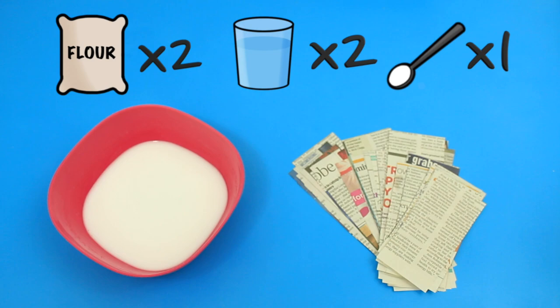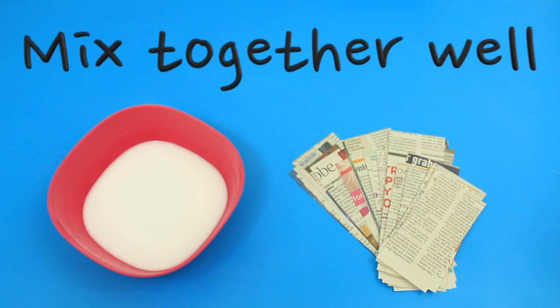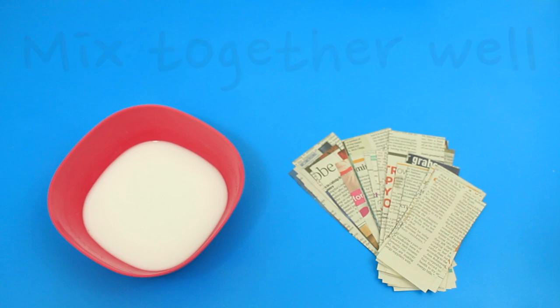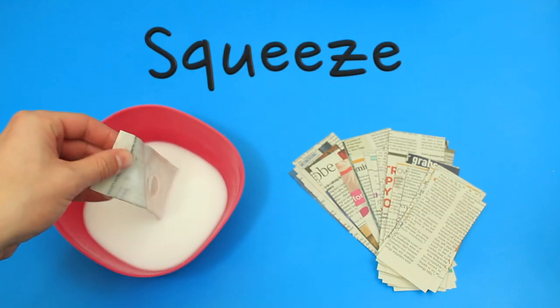Whichever recipe you choose, the most important thing is to make sure it's mixed together well. Once it's ready, dip a piece of paper into the mix, squeeze off any excess paste as we don't want it to be too wet, and then apply this to your project.